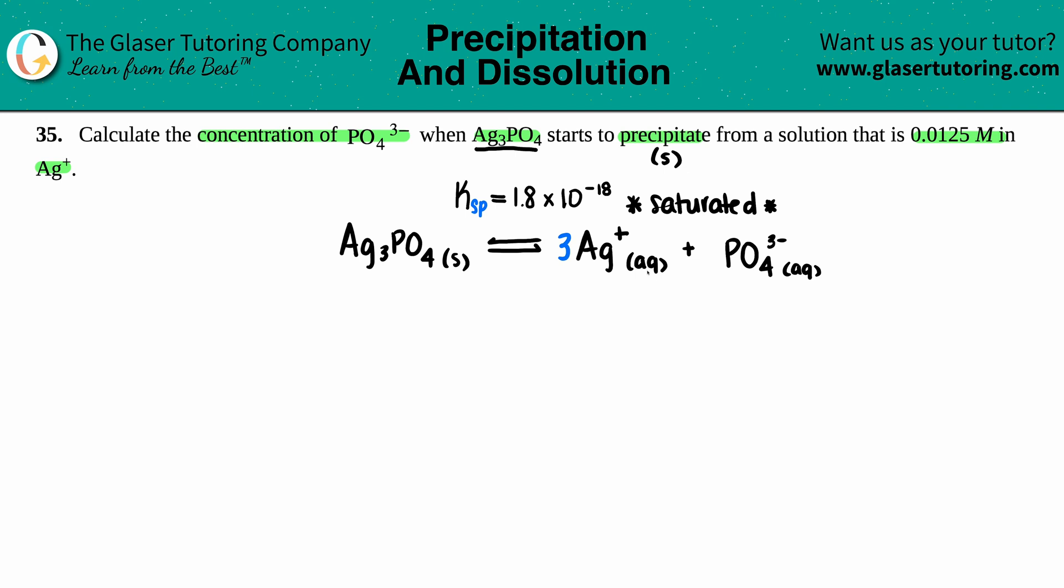Now I'm just going to put the numbers that they gave me. They told us that we have 0.0125 molarity of the Ag, so right under the Ag I'm going to say I have 0.0125 molarity. Don't get tempted to times this number by three because you see a three in the balanced equation.